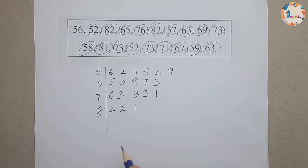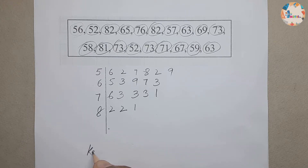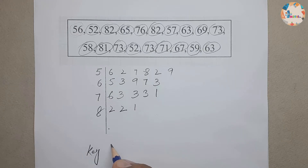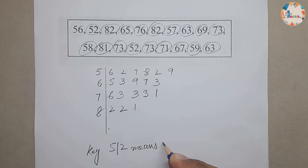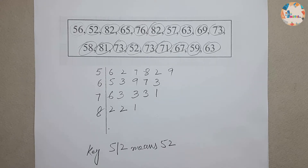We also have to provide a key. The key is: 5|2 means 52. After writing the diagram, we need to arrange the leaves in ascending order to create an ordered stem and leaf diagram.